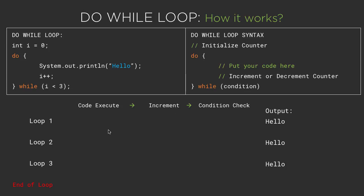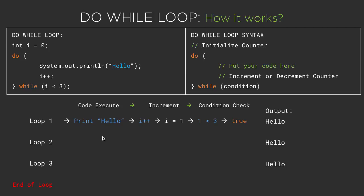When the loop is executed for the first time, no matter what the condition is, we first execute the code — that is, we simply print hello in the output console. Then we increment the counter i++. Previously our counter variable was initialized to 0, but now it is incremented to 1. The condition is checked on i equal to 1: 1 is smaller than 3, which is true. So once the condition is true, we migrate to loop 2.